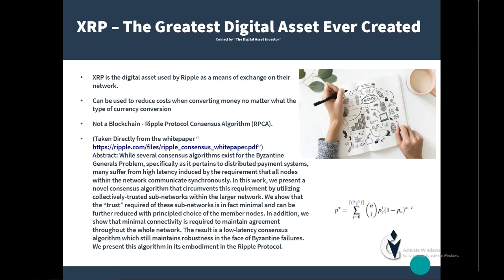From the Ripple white paper: while several consensus algorithms exist for the Byzantine General's problem, specifically as it pertains to distributed payment systems, many suffer from high latency induced by the requirement that all nodes within the network communicate synchronously. They present a novel consensus algorithm that circumvents this by utilizing collectively trusted subnetworks, requiring minimal connectivity to maintain agreement throughout the whole network — a low latency consensus algorithm that maintains robustness in the face of Byzantine failures, embodied in the Ripple Protocol.